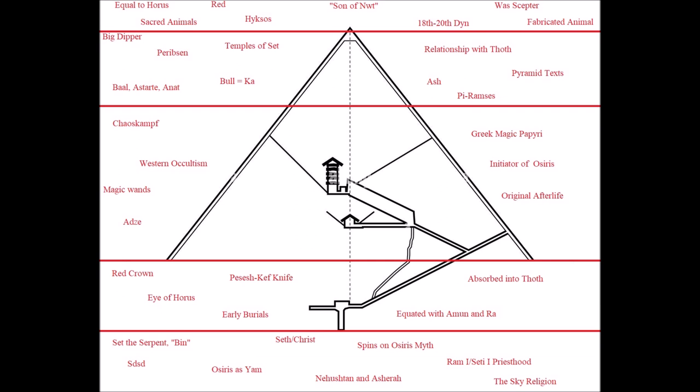Ramesses I and Seti I priesthood: There's another thing I found in only one or two sources, but it says that the two were priests of Setesh during the reign of Horemheb. When Horemheb chose Ramesses I to be his successor, not only was this family dedicated to Setesh, but they were actually part of the high priesthood for the god.